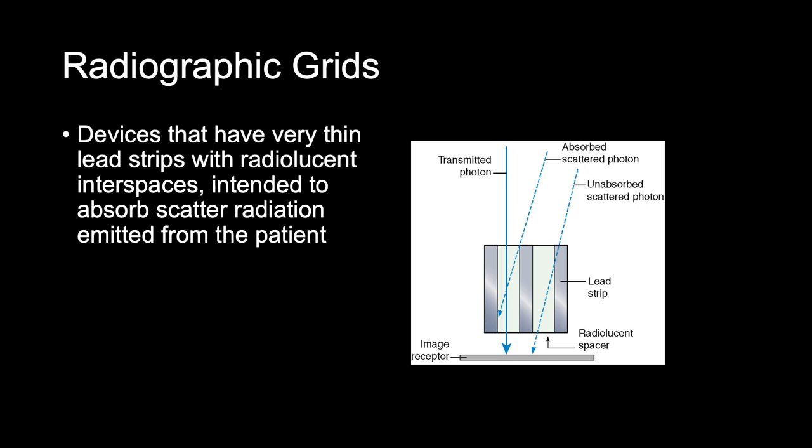Grids are approximately a quarter inch thick and they can range from 8 by 10 to 17 by 17, depending on the size of the IR with the machine that you are using. The grid is a device that has very thin lead strips with radiolucent interspaces. It is intended to absorb scatter radiation emitted by the patient before it reaches the IR, and is placed between the patient and the IR.